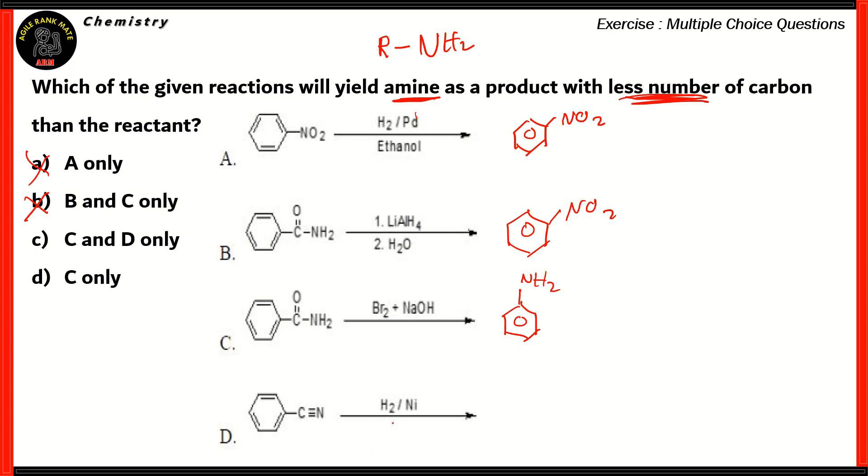And in reaction D, we have benzonitrile, and benzonitrile in the presence of hydrogen and nickel forms a benzene ring with a functional group of CH2 and NH2.